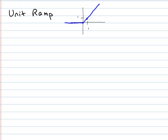It's got a point here at 1, 1, so it has a slope of 1. And that's why we call it a unit ramp. Unit has to do with a slope that's equal to 1.